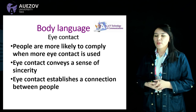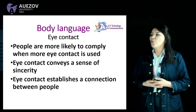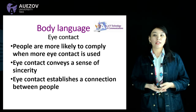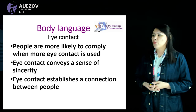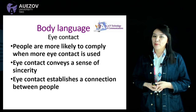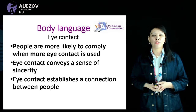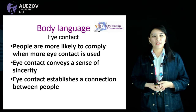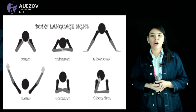Here we are going to discuss eye contact. People are more likely to comply when more eye contact is used, and eye contact conveys a sense of sincerity. With the help of eye contact, we establish communication between people. For example, if you are going to give a persuasive speech, you should hold eye contact with your audience — this represents self-confidence.